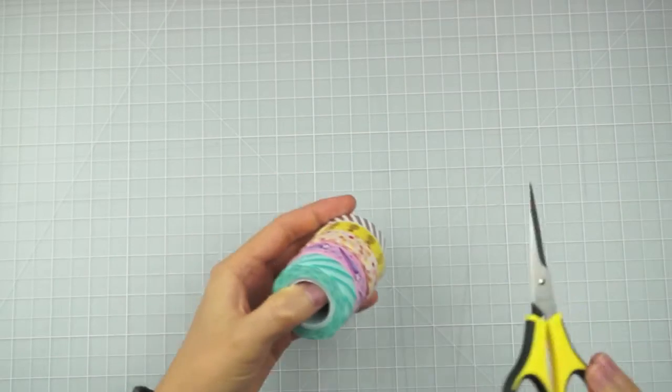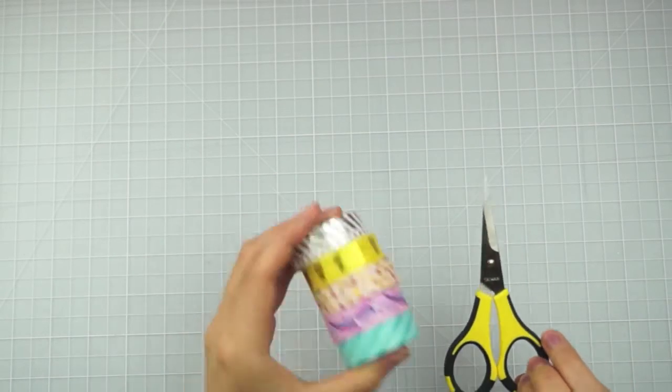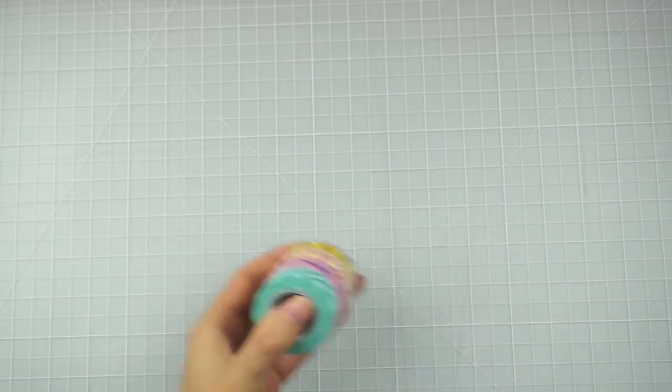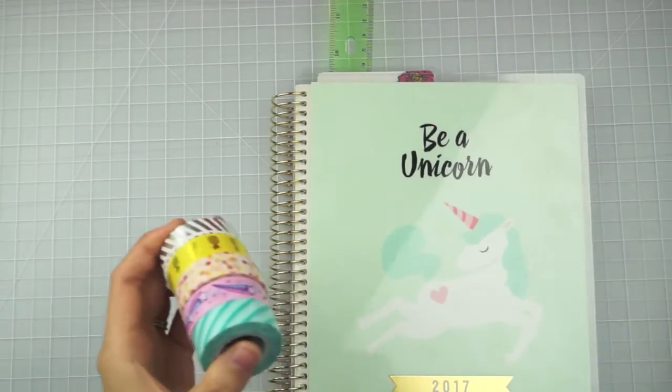You can cut it with scissors. I use these Cutterbee scissors quite a bit for cutting washi tape. But if you are attaching it in a specific place and you need it cut at a specific spot, I have a couple of quick tips for you guys.